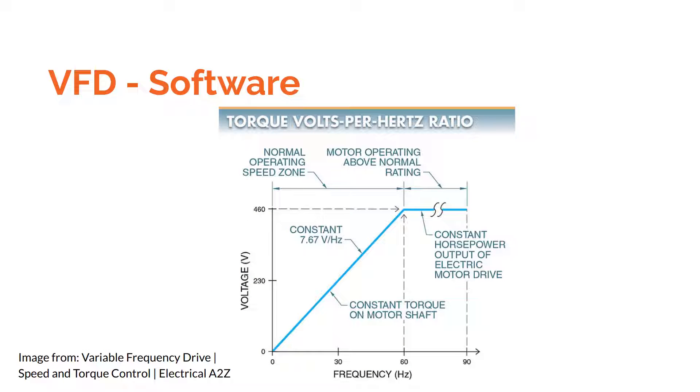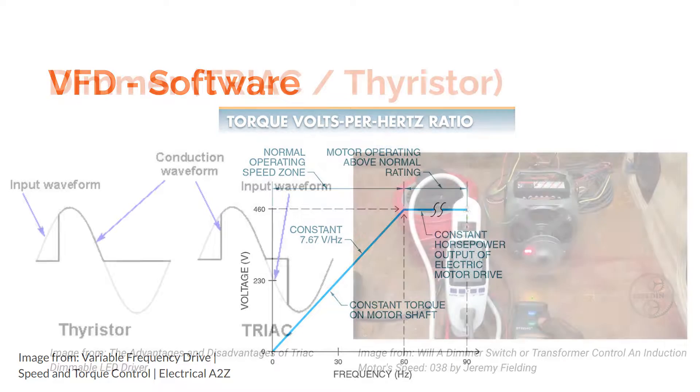The control method of this VFD is V over F, which maintains a constant relation between the outputted average voltage and the frequency up to the rated speed. After going over all of this, the VFD may seem a bit complicated. Are there any simpler options for induction motor speed control?